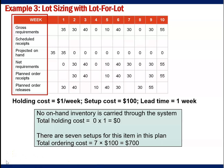The lot sizing solution using the lot for lot technique is shown in the table. The holding cost is $0 as there is never any end-of-period inventory. Inventory in the first period is used immediately and therefore has no holding cost. But seven separate setups, one associated with each order, yield a total cost of $700.